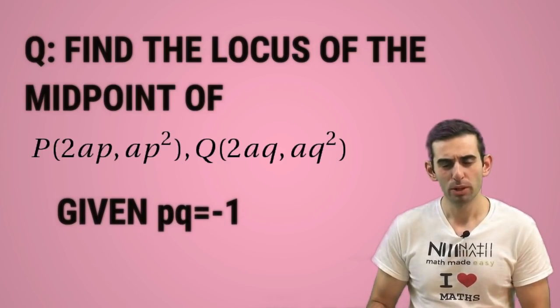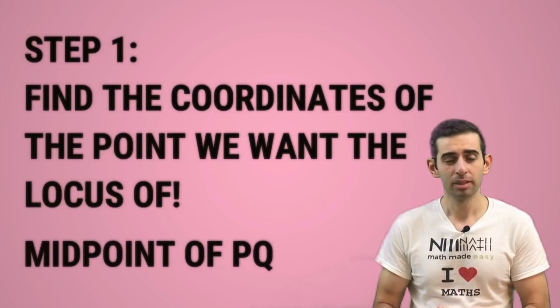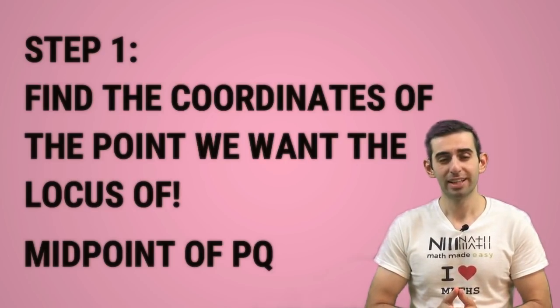These are the parametric points that lie on the parabola x² = 4ay. So what's step one in finding the equation of the locus? Find the coordinates of the point we want to find the locus of, which is the midpoint of PQ. Now I made a whole other tutorial on how to find that point, so I won't go over that today.